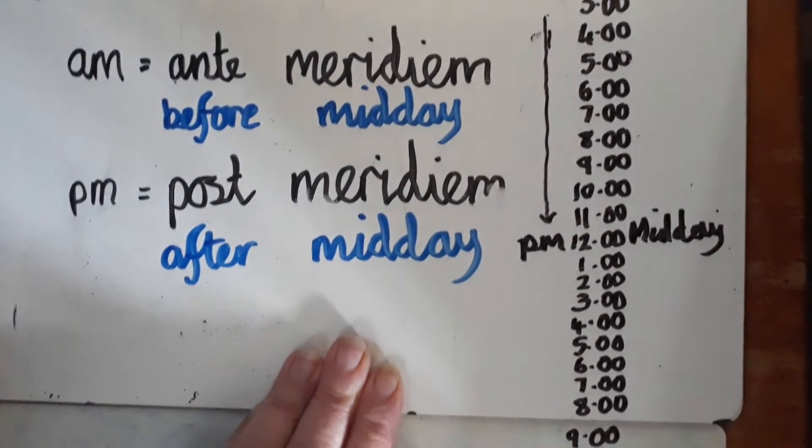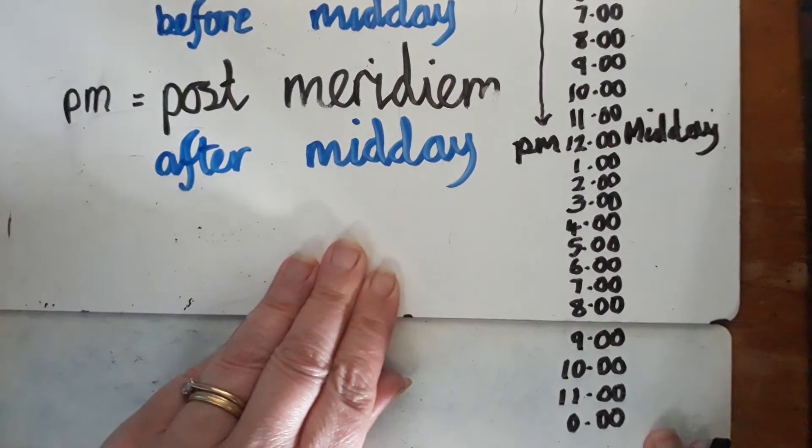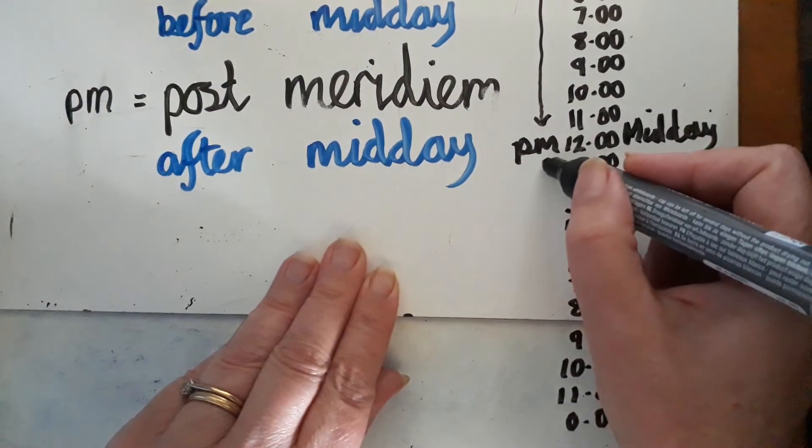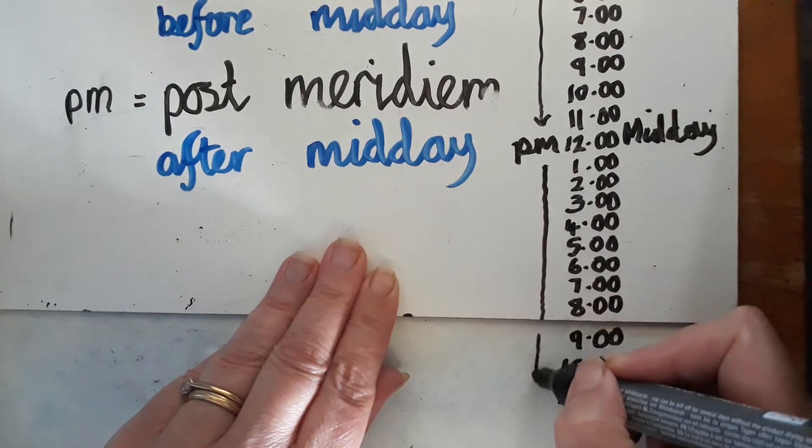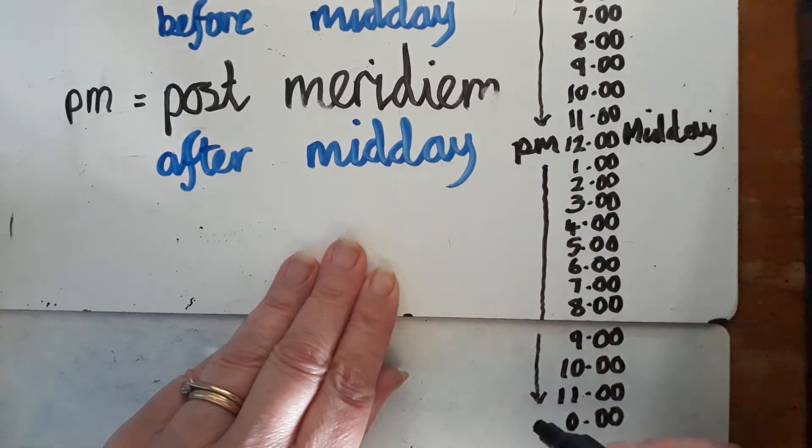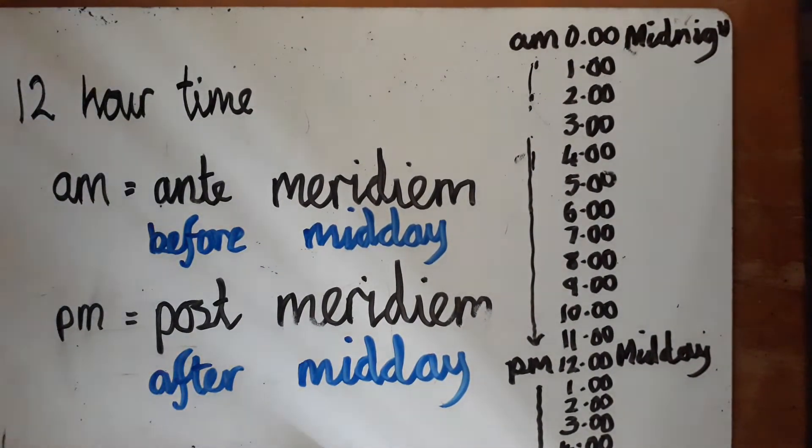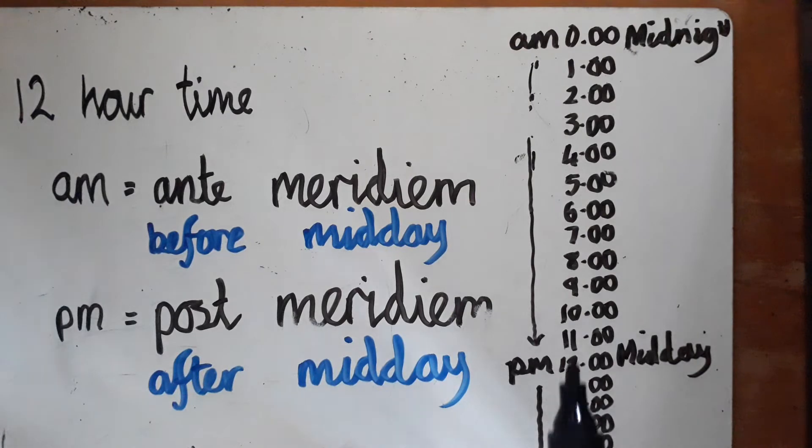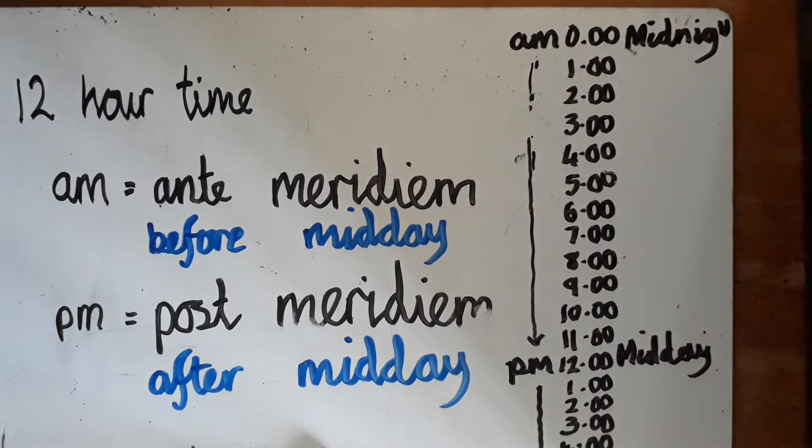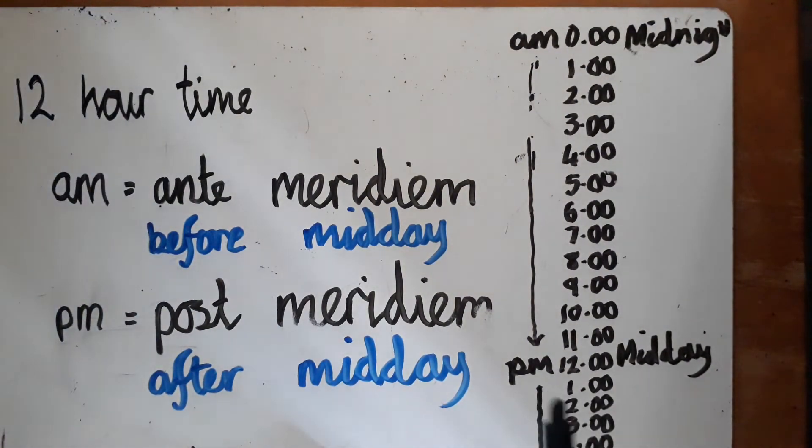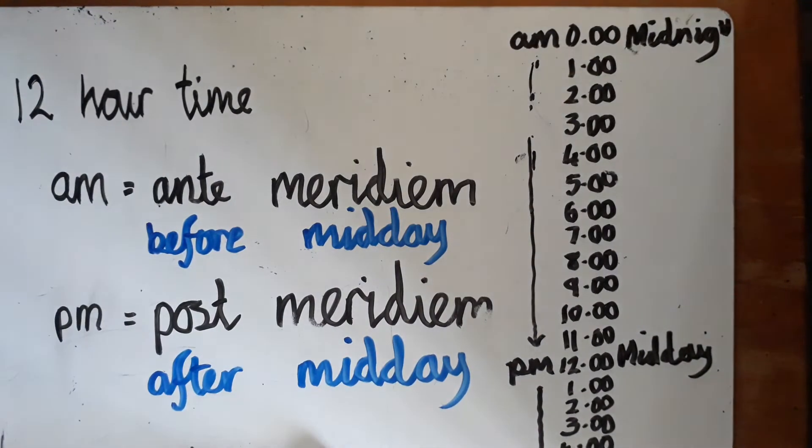To avoid confusion between 12 o'clock midnight and 12 o'clock midday, many people use the words midnight and midday. But if you want to understand whether it's AM or PM: midnight is AM and midday is PM.